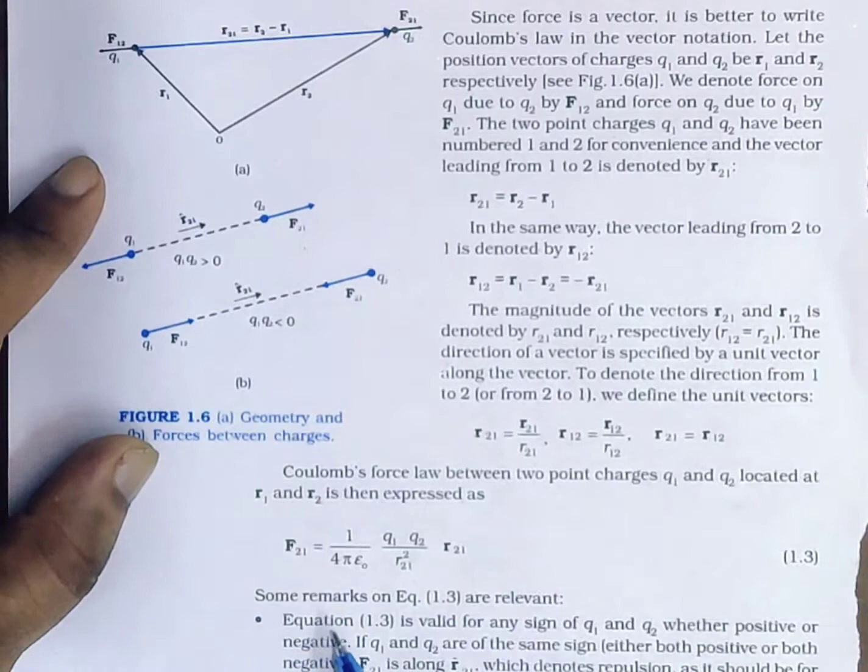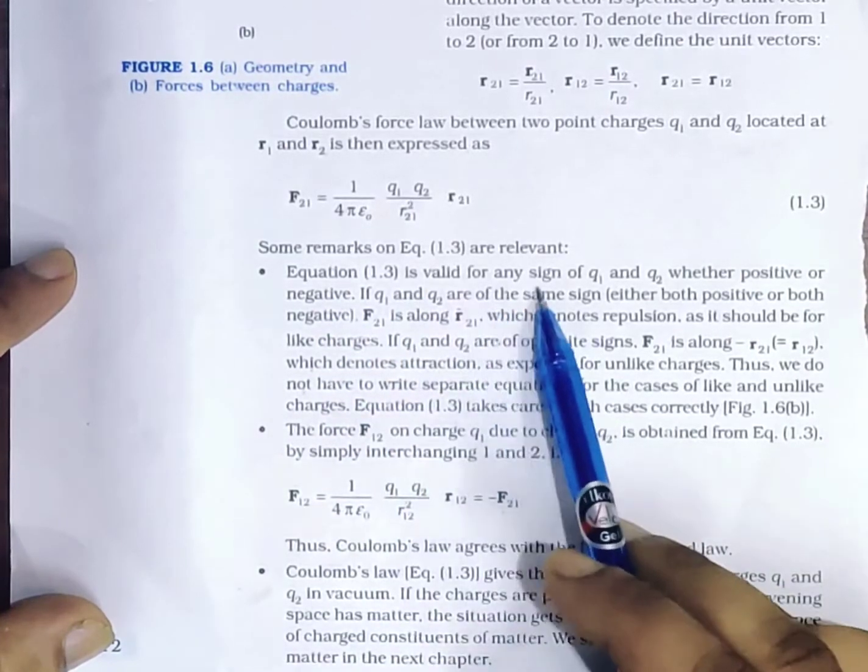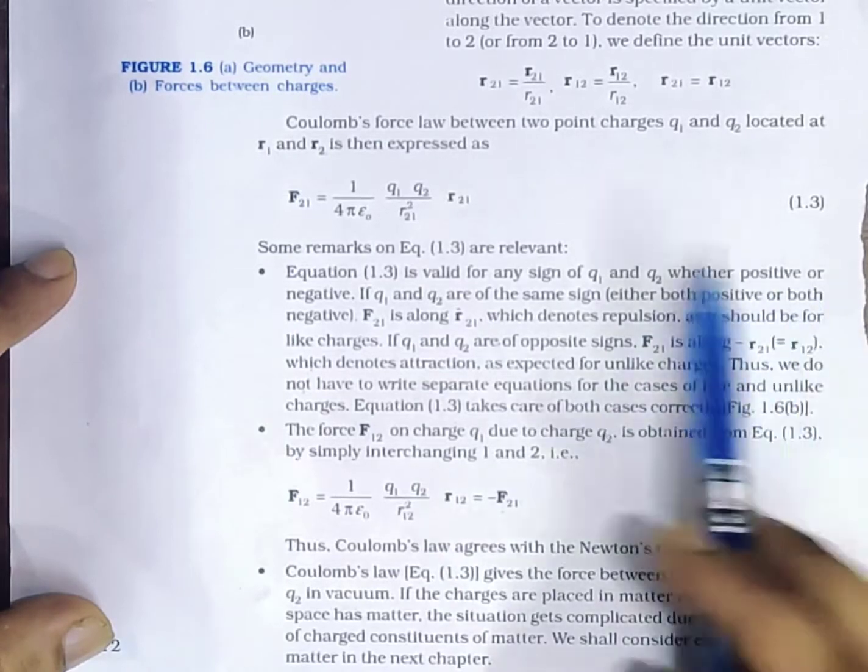Some remarks on equation 1.3 are relevant. Equation 1.3 is valid for any sign of Q1 and Q2, whether positive or negative.